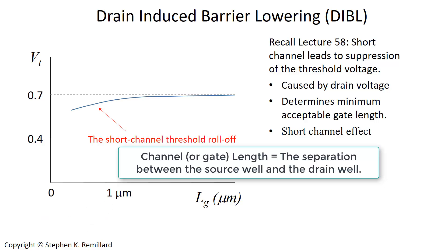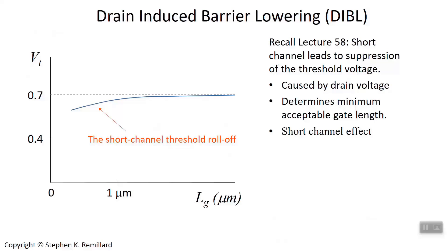This short channel effect is a consequence of the drain voltage pulling down the potential barrier in the channel, typically referred to as drain induced barrier lowering, which is a byproduct of the drain having voltage, where it invades the gate and the effective gate length becomes shorter.